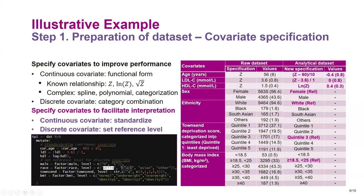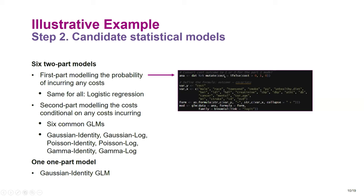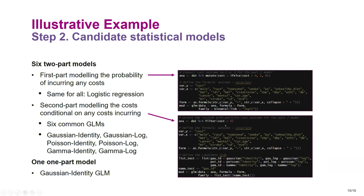We consider six candidate models: a two-part model where the first part models the probability of incurring any cost using binomial family with logit link (logistic regression), and the second part models cost conditional on any cost incurring using different candidate GLMs on observations with cost greater than zero. We also include a one-part model that directly uses the whole dataset for comparison.